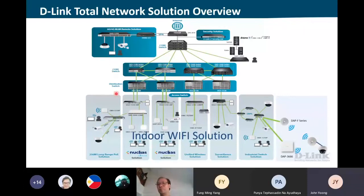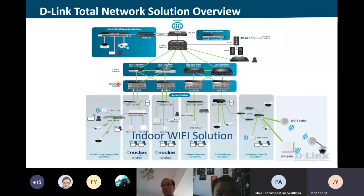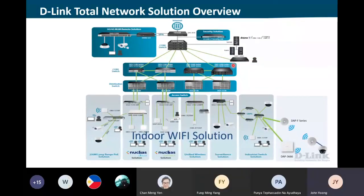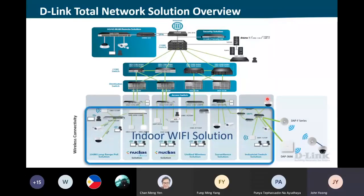We have the core switch — the JSC — and the data center switch, the DXS3600 series. Next, we have the distribution layer, which is the DGS3630 or the 3130. For the hardware controller on the AP, as you can see, I highlight the DWC2000, which is able to manage all our DWL series. For the indoor Wi-Fi solution, we have Nucleus Connect and Nucleus Cloud, as well as the hardware DWC solution.